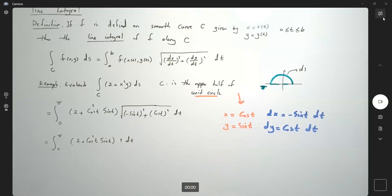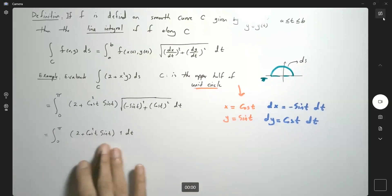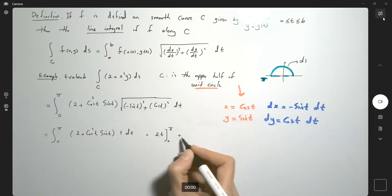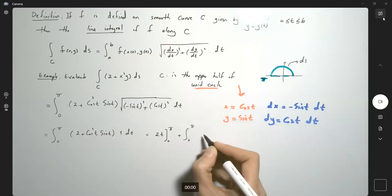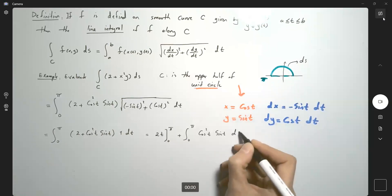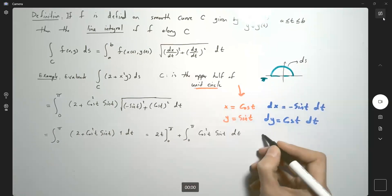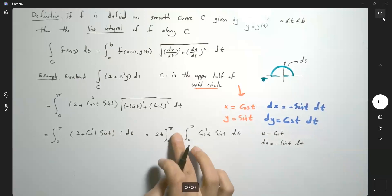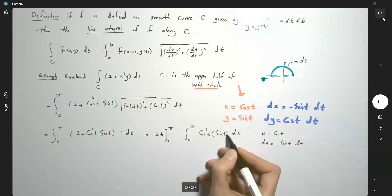Using elementary calculus, this equals the integral of 2 dt, which is 2t from zero to π, plus the integral of cosine² t sine t dt. For the second integral, use u-substitution: u equals cosine t and du equals negative sine t dt.